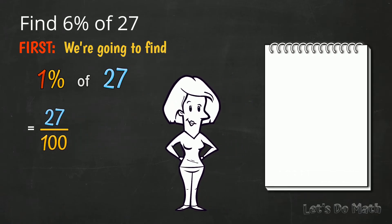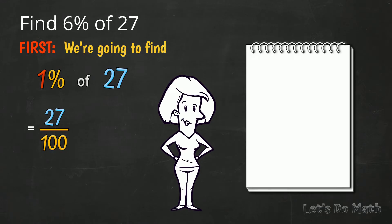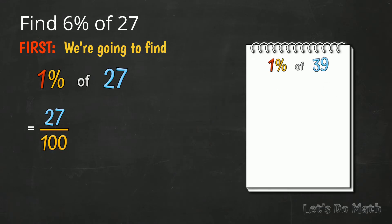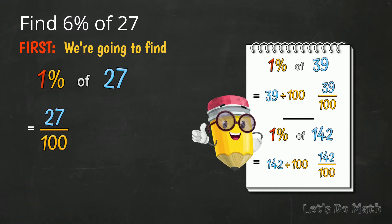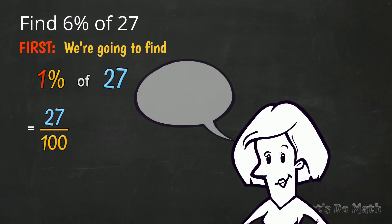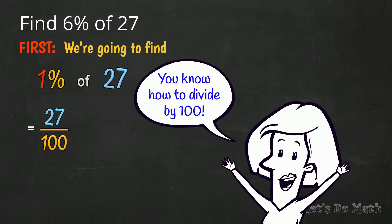And I can give you some other examples for your notebook right now. For example, 1% of 39 would be 39 divided by 100. 1% of 142 would be 142 divided by 100. You get the idea! And of course, you know how to divide by 100.